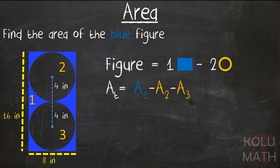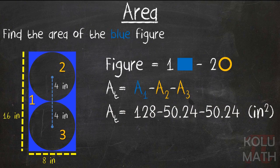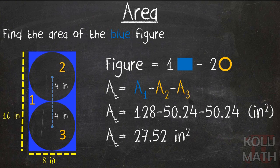Okay. Let's go ahead and number those guys. The total area will be the area of figure one minus the area of figure two and the area of figure three. Okay. We subtract them both. So let's plug in the numbers. And that leaves us with a total of 27.52 inches squared.